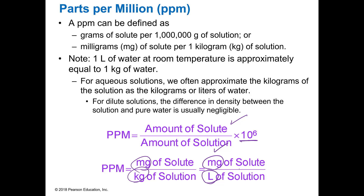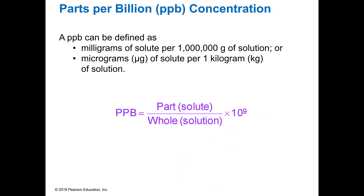If it's parts per hundred, you do amount of solute divided by the amount of solution times a hundred — that's the same thing as percent. If it's parts per million, you do parts of solute divided by the solution times a million. If it's parts per thousand, it's amount of solute divided by amount of solution times a thousand. Parts per billion, following the same line of reasoning, is parts of solute divided by the solution times ten to the nine, which is a billion.